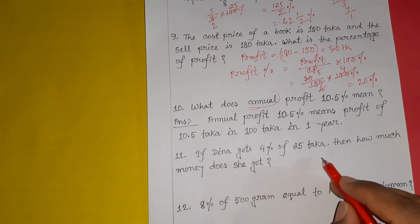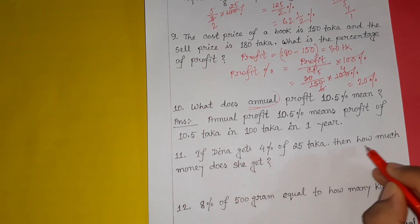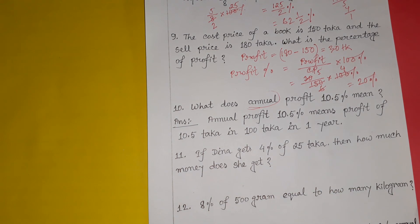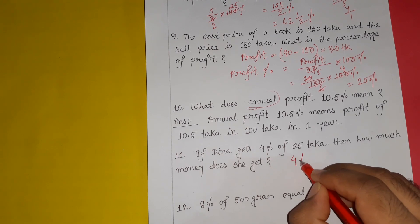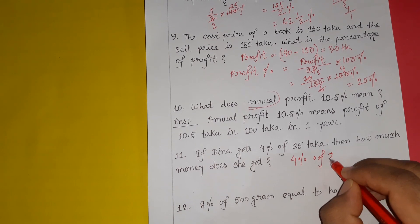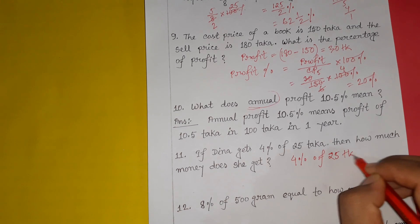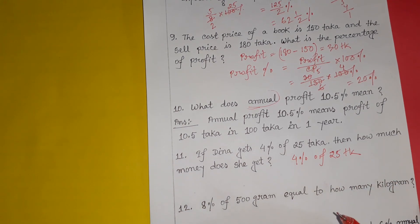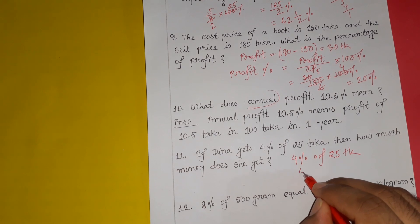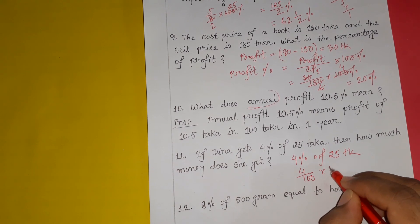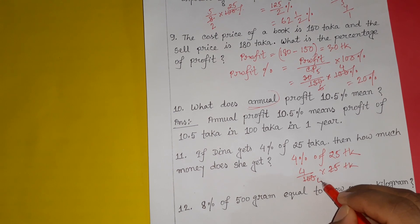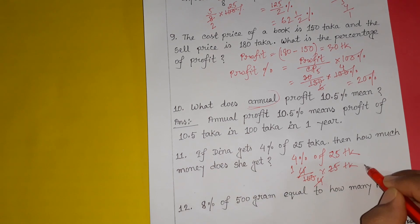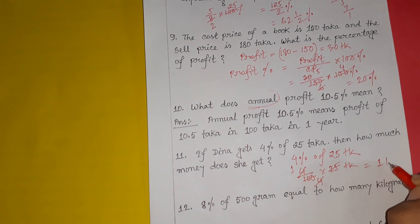If Dina gets 4% of 25, then how much money does she get?